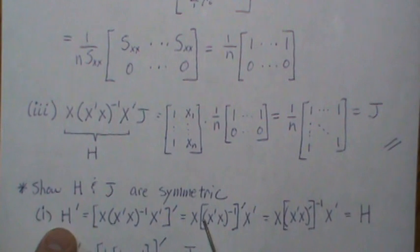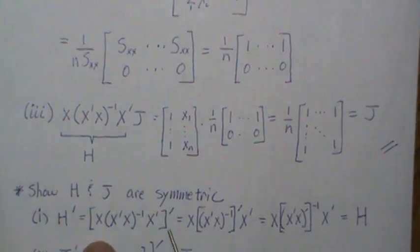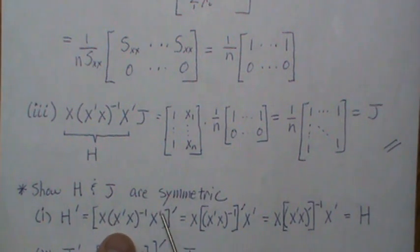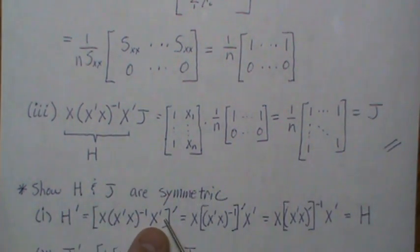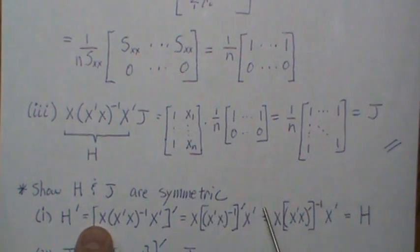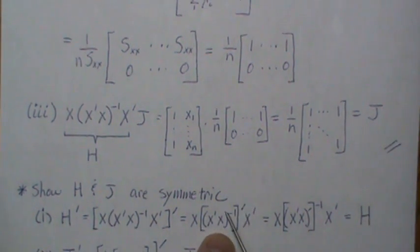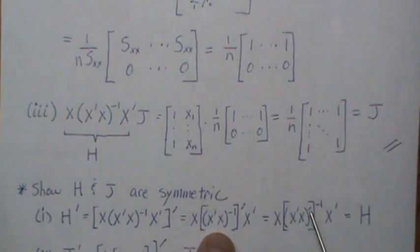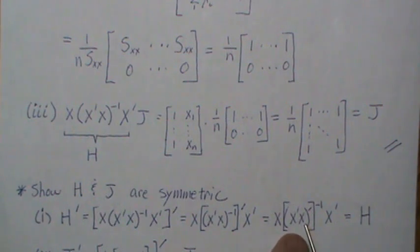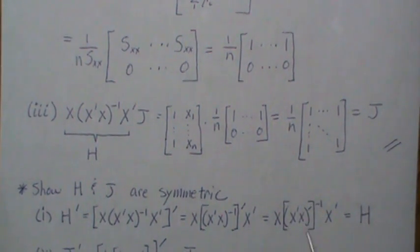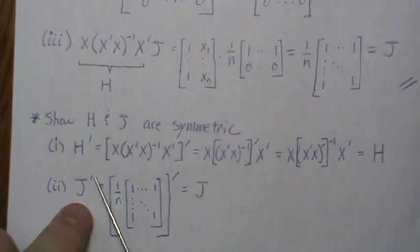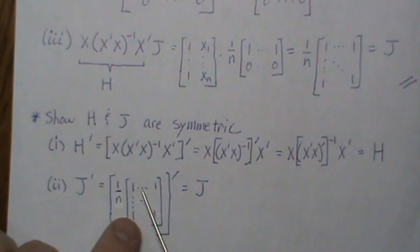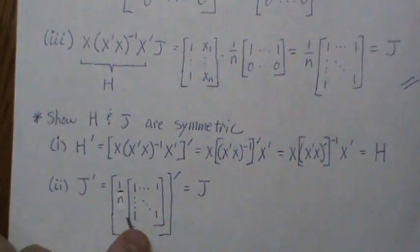H and J are both symmetric. For H, distributing the transpose reverses the order and transposes each factor: X-transpose-transpose is just X, and (X'X)⁻¹ transposed is (X'X)⁻¹, giving back H. So H is symmetric. For J, every element is 1/n, so transposing it gives the same matrix back, which is just J.